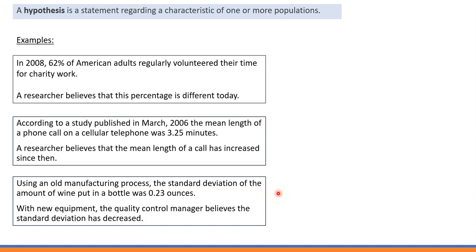What can we treat as the hypothesis in this example? The following statement: the standard deviation of the amount of wine put in a bottle was 0.23 ounces. And in all these examples,